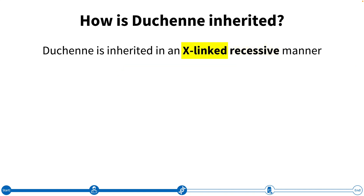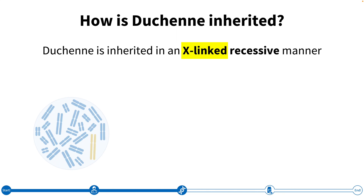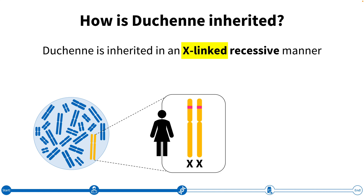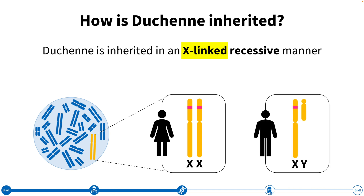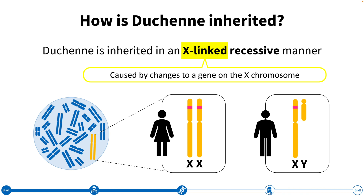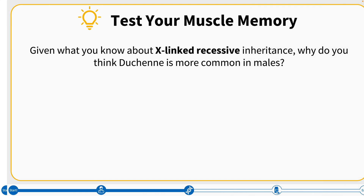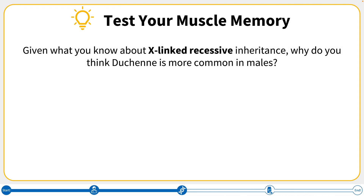Now what about the X-linked part of the equation? Remember that our 23rd pair of chromosomes are the sex chromosomes. Females have two X chromosomes, one from the mother and one from the father. Males, on the other hand, have one X chromosome from the mother and a Y chromosome from the father. A disease that is X-linked means that it is caused by changes to a gene that exists on the X chromosome, just like the pink one we've shown here.